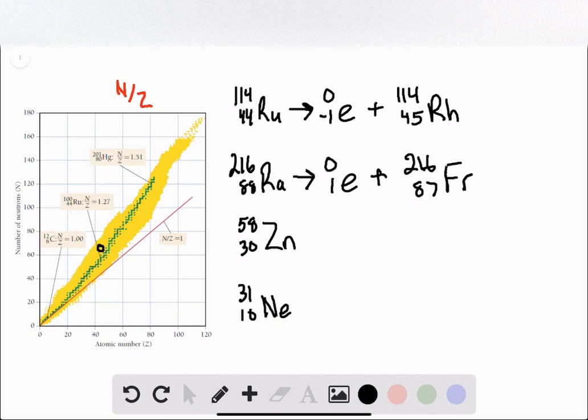This same thing is going to be true for zinc. So zinc's proton to neutron count is too low. So we will see a positron emission in order to form copper-58.